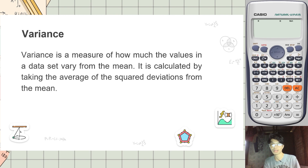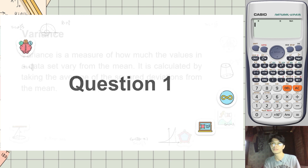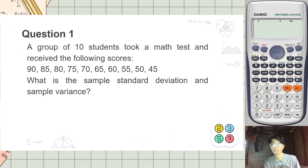Variance is a measure of how much the values in a data set vary from the mean. It is calculated by taking the average of the squared deviations from the mean.